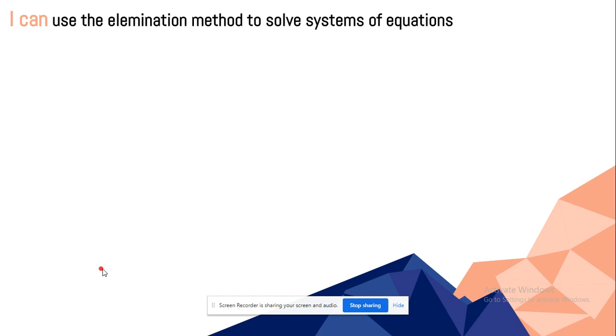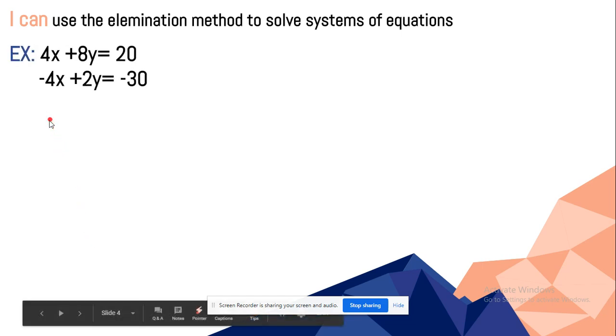I can use the elimination method to solve system of equations. Here is an example. We have 4x + 8y = 20 and -4x + 2y = -30.